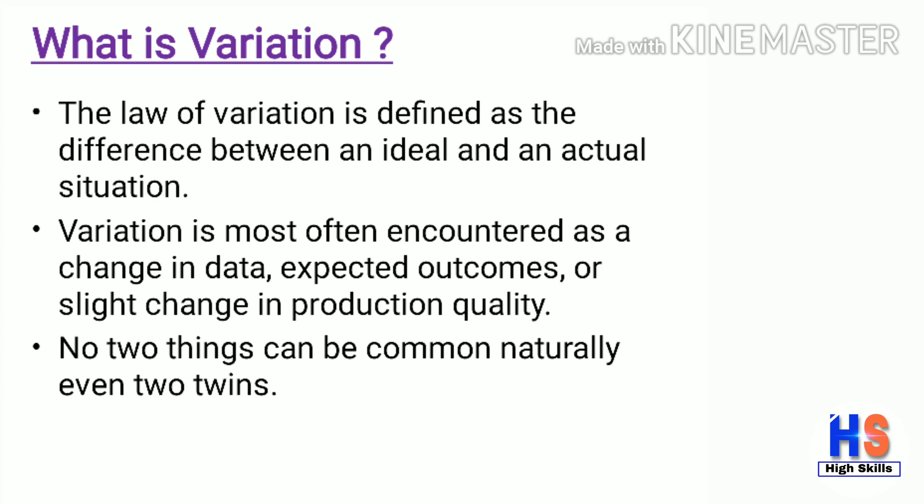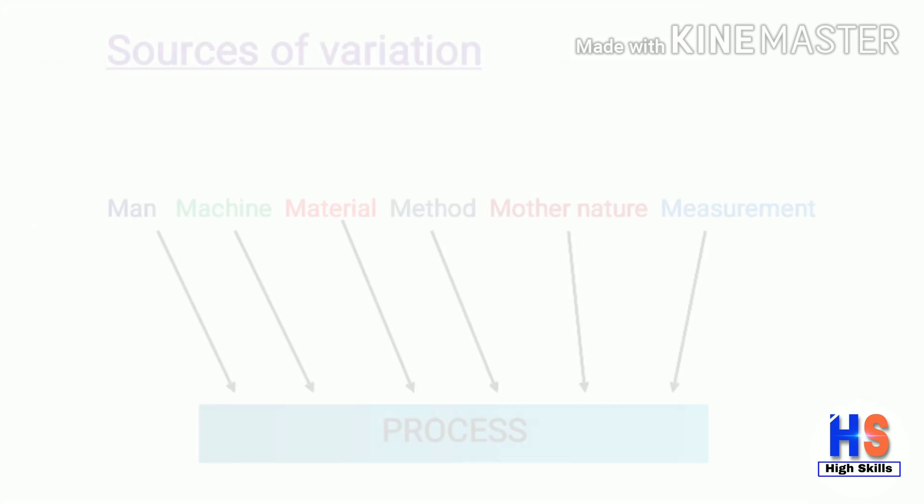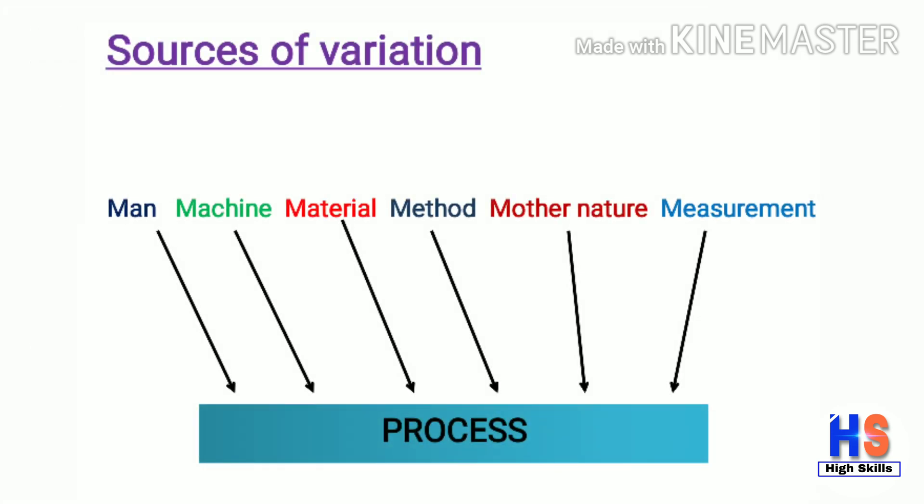What is variation? The law of variation is defined as the difference between an ideal and an actual situation. Variation is most often encountered as a change in data, expected outcomes, or slight changes in production quality. No two things can be exactly the same naturally — even two twins. There are some sources of variation due to which a process can get affected: man, machine, material, method, mother nature, and measurement.